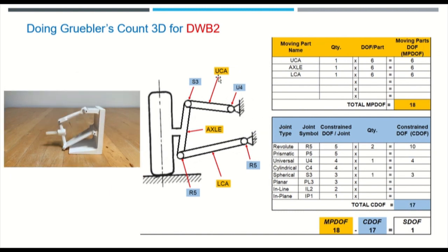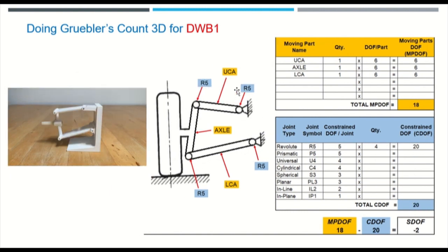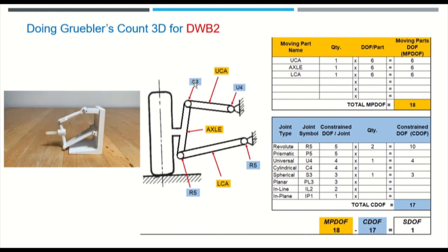Now, let's say I wanted to fix that, and I want my mechanism to freely rotate up and down like a suspension should. I replace the upper control arm's joints from two revolute joints to an S3, which is spherical, and a U4, which is a universal joint.